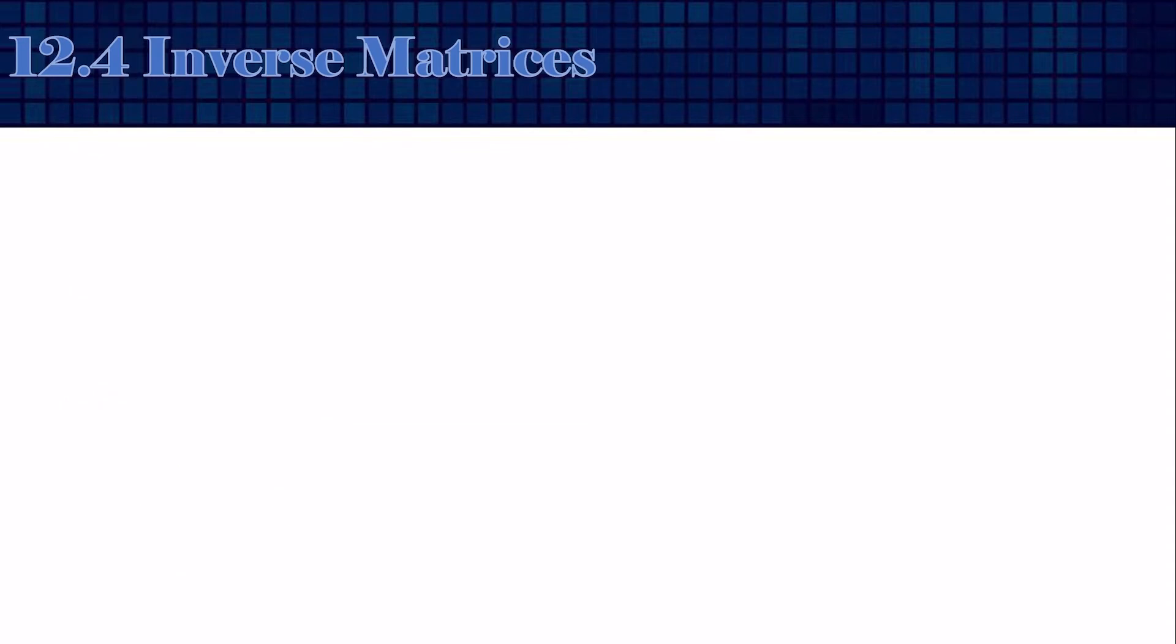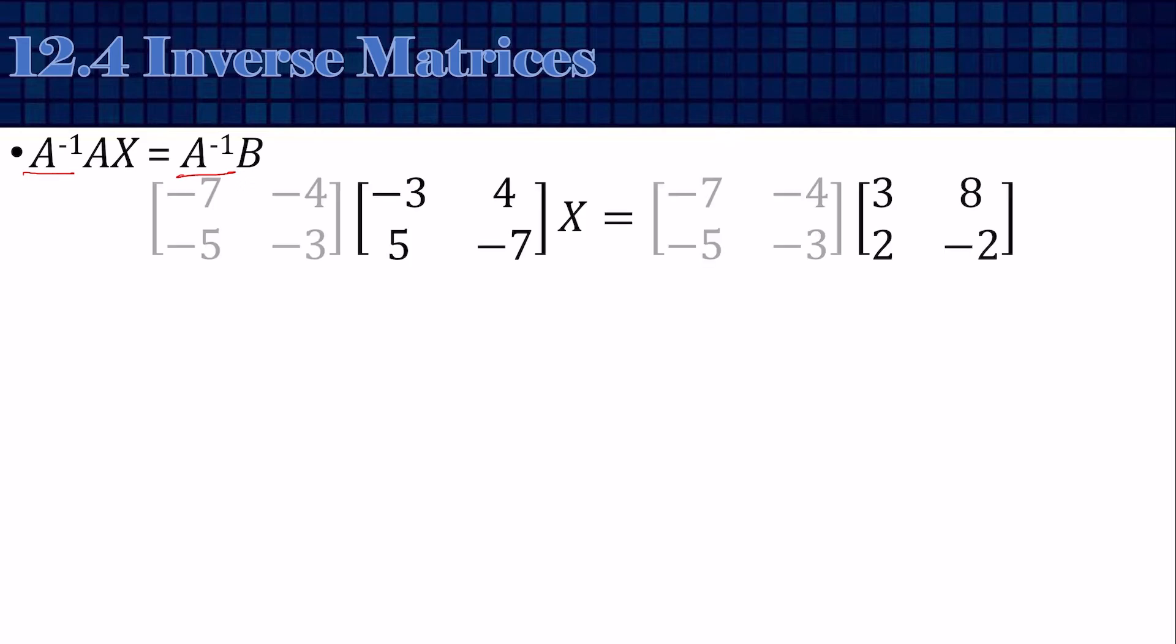Now that we've found the inverse, we'll multiply both sides of our equation by the inverse. Notice I've put the inverse first on both sides. On my matrix equation, I've put the inverse first on both sides. On the left side, those are going to cancel each other.